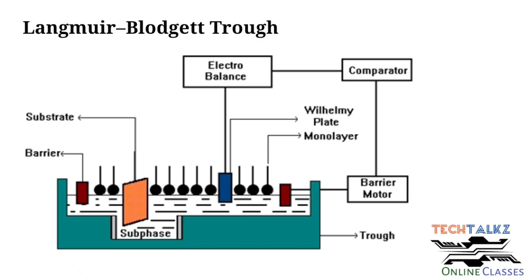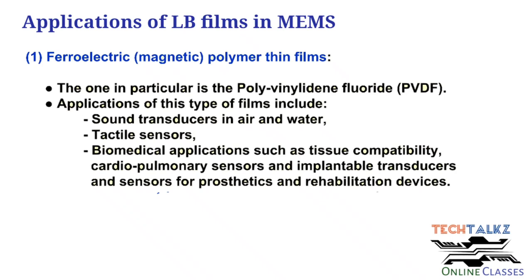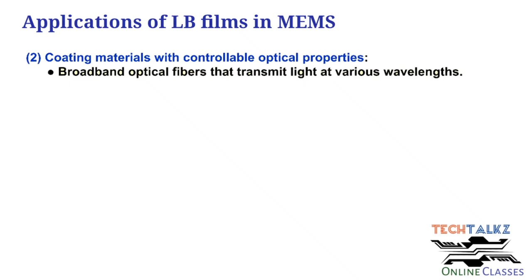Applications of LB films in MEMS include the use of thin piezoelectric or magnetic materials coated using LB film methodology — for example, PVDF. Another application is coating materials with controllable optical properties: by varying the thickness of the polymer material layer by layer — depositing one monolayer at a time multiple times — the optical properties of the material can be precisely changed. Optical fibers are one important example.